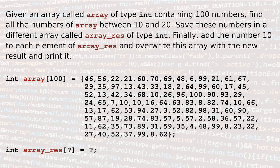Given an array called array of type int containing 100 numbers, find all the numbers of array between 10 and 20. Save these numbers in a different array called array_res of type int. Finally, add the number 10 to each element of array_res and overwrite this array with the new result and print it.